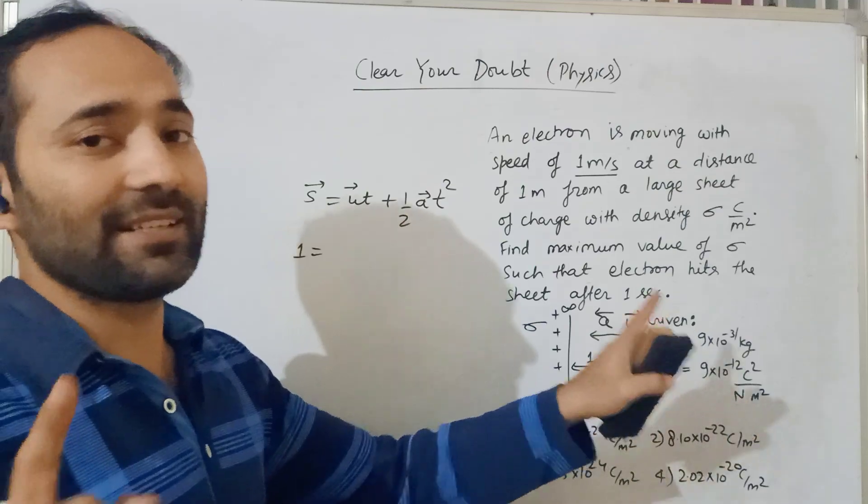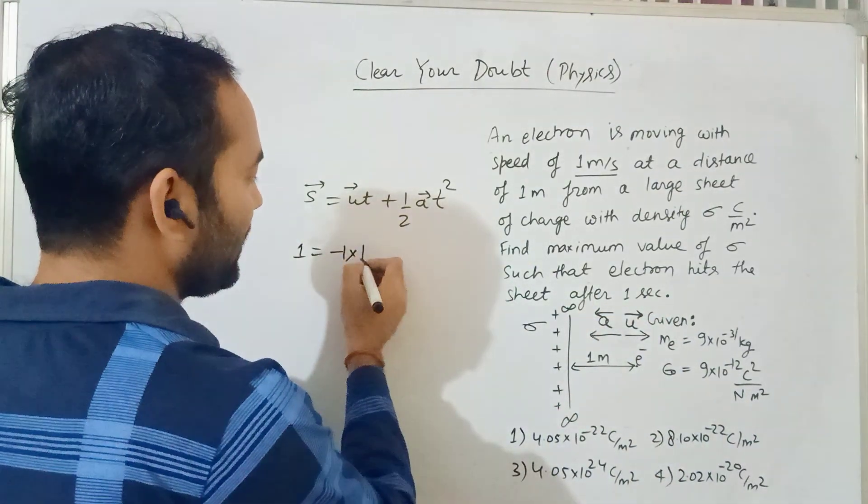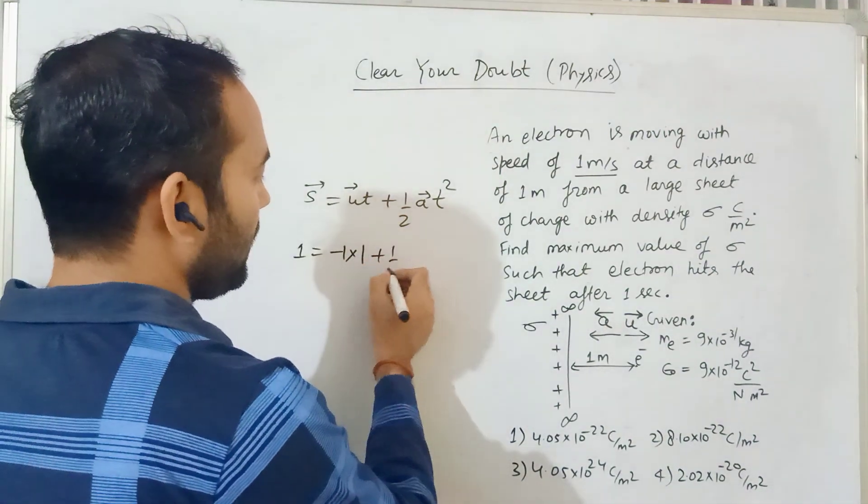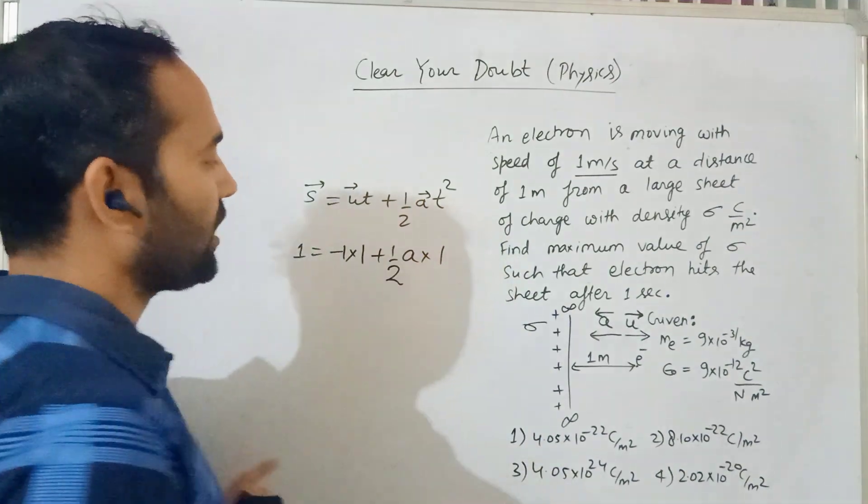Since we're taking acceleration as positive, u will be minus 1 meter per second. Time is 1 second. So: 1 = -1(1) + (1/2)a(1)².